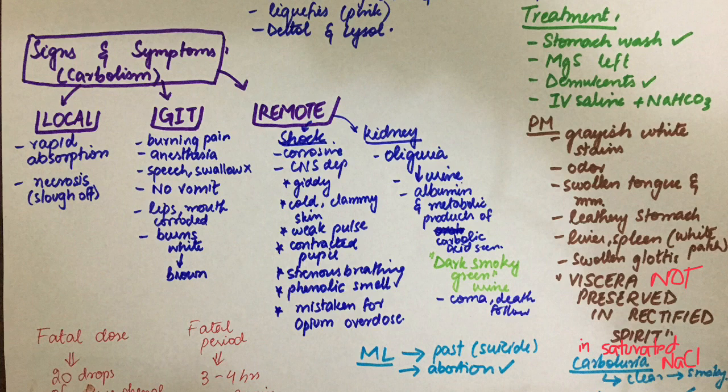An important point is carboluria, which refers to urinary findings of carbolic acid. The patient's urine is clear at first but then becomes smoky due to the presence of hydroquinone and pyrocatechol, which are byproducts of carbolic acid. Another important point is ochronosis or phenol marasmus, which is chronic exposure to phenol affecting surgeons or nurses who use it as a disinfectant.